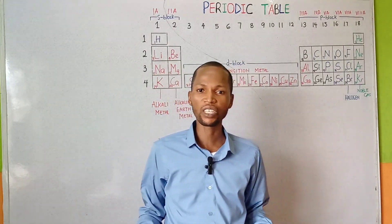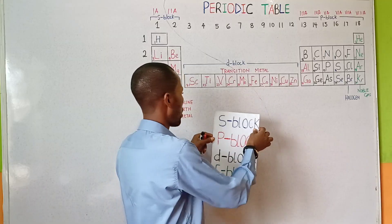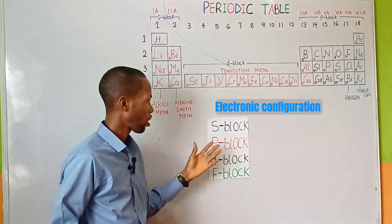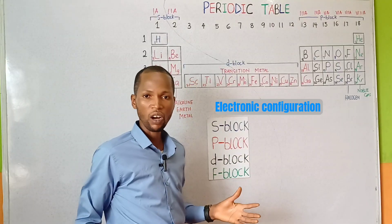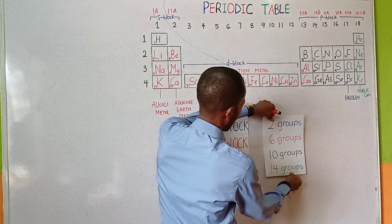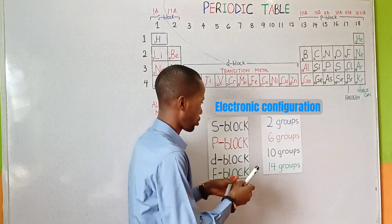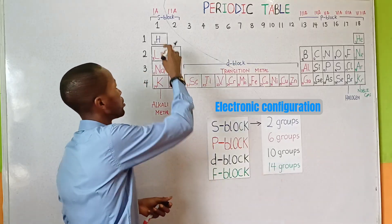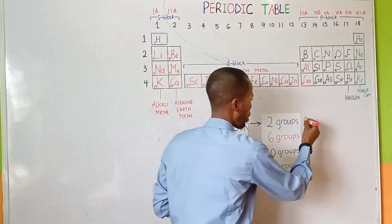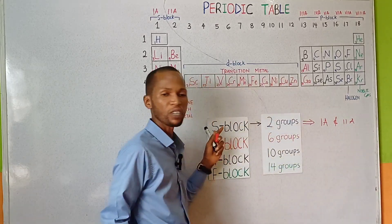On the basis of electronic configuration, elements are classified into four blocks: the S, P, D, and F blocks. The S block contains two groups, group 1 and group 2 — that is group 1A and group 2A.